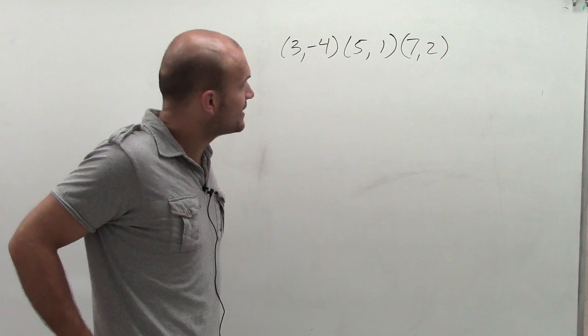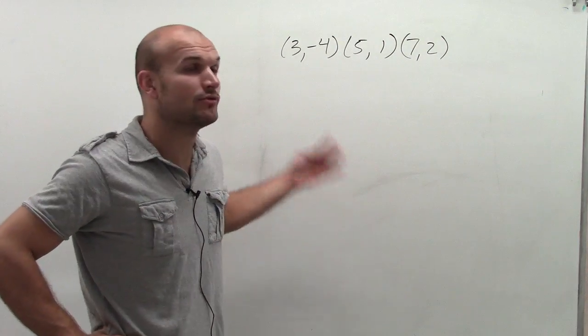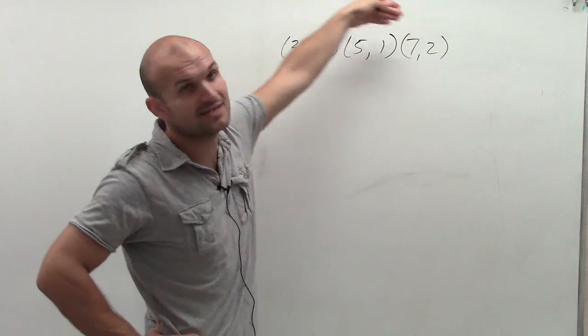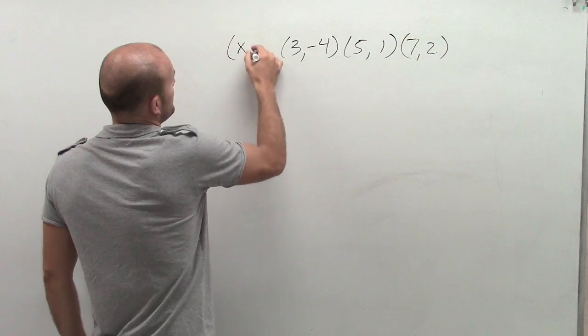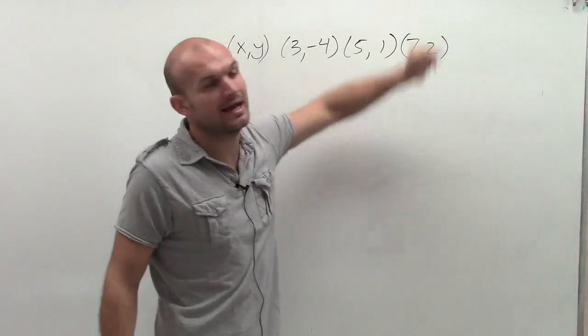Now when we take a look at this, we see that domain would be the input values, which is all your x values. Because remember, a coordinate point is x, y. So my domain would be 3, 5, and 7.